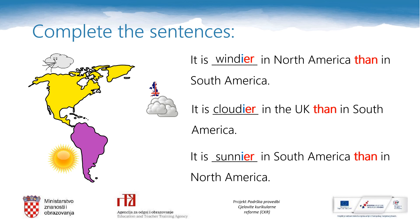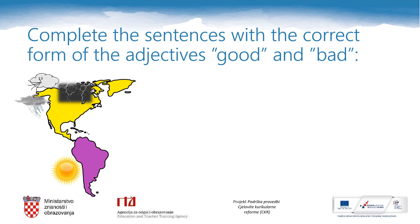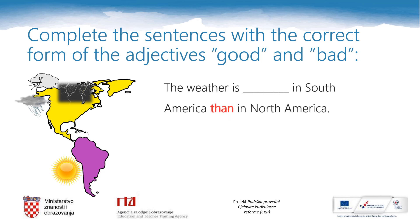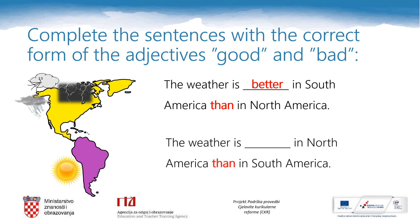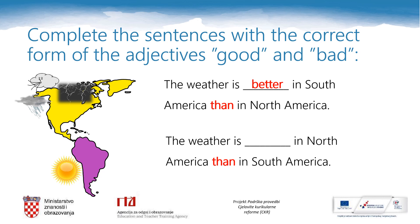The letter Y changes to I before adding -ER. Now complete these sentences with the correct form of the adjectives good and bad. The weather is better in South America than in North America. The weather is worse in North America than in South America. Some adjectives are irregular and must be learned: better, worse.